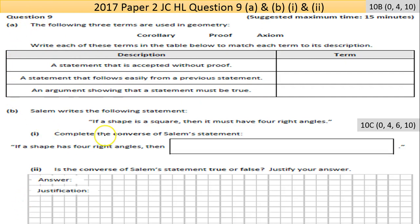So Question 9 here with Part A and B (i) and (ii). Part A has 10 marks. The following three terms are used in geometry: corollary, proof, and axiom. It says write each of these three terms in the table below to match each term to its description.